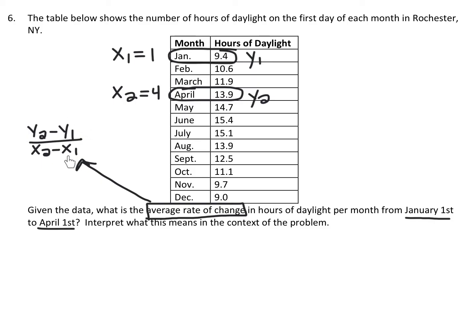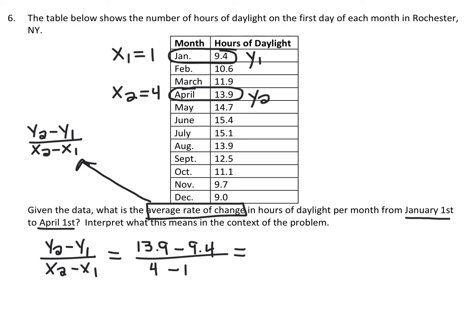Let's plug those numbers into our formula: y2 minus y1 over x2 minus x1. If we subtract our numerators, that gives us 4.5. And if we subtract our denominators, that gives us 3. And 4.5 divided by 3 simplifies to 1.5. The units they give you are hours of daylight per month.